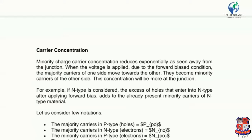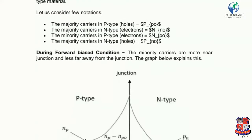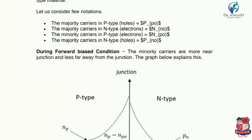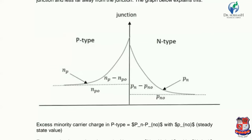During forward bias condition, the minority carriers are more near the junction and less far from the junction. The graph below explains this. In the graph, P-type and N-type regions are shown with the junction between them. The excess minority charge carriers in P-type are above the steady state value, and the excess minority charge carriers in N-type are near their steady state value.